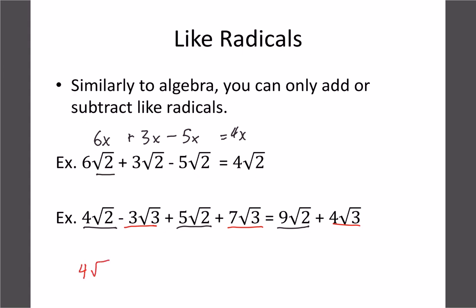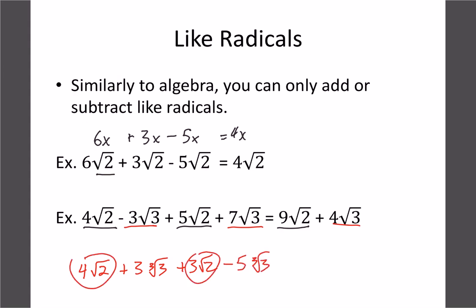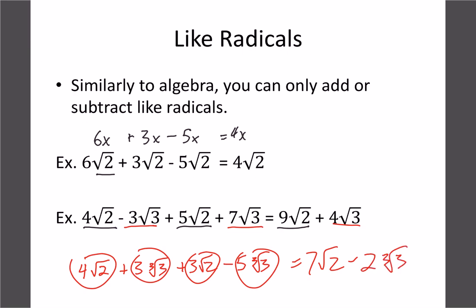It also works with different index types — if I gave you 4√2 + 3∛3, we couldn't put those together because they're not like terms. But I could add 3√2 and -5√2 since those are the same, and I could combine the cube roots of 3 together: 3 - 5 = -2∛3. As long as the index number and the root number are the same, you can combine them just by adding or subtracting the front numbers.